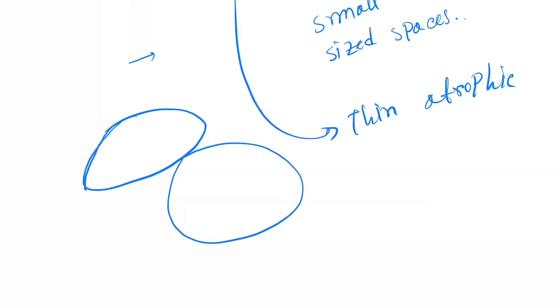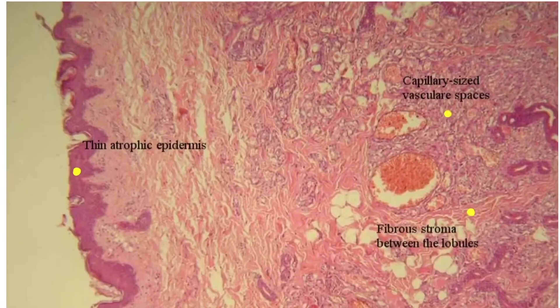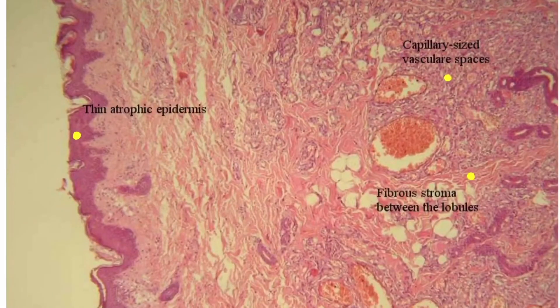Another feature is the formation of a solid endothelial bud — between two endothelial layers, a solid bud forms. Now let's look at the histopathological slides. Here you can see the epidermis, which is thin and atrophic.